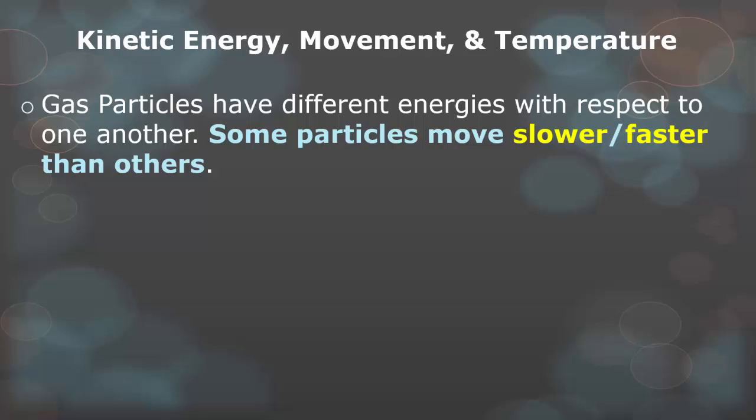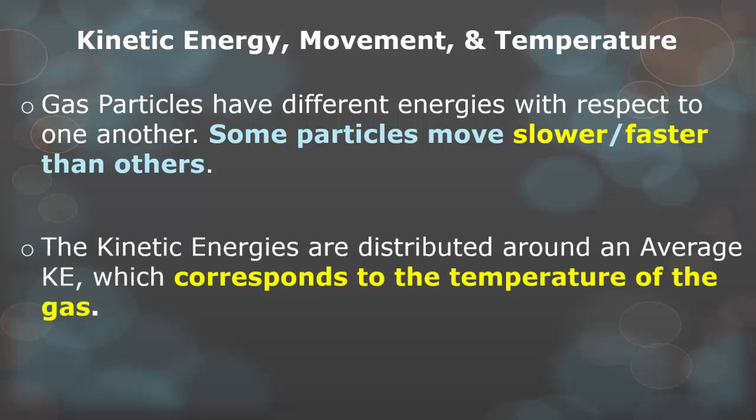So gas particles have different energies with respect to one another. Some particles move slower. Some particles move faster than others. The kinetic energies are distributed around an average kinetic energy, which corresponds to the temperature of the gas.